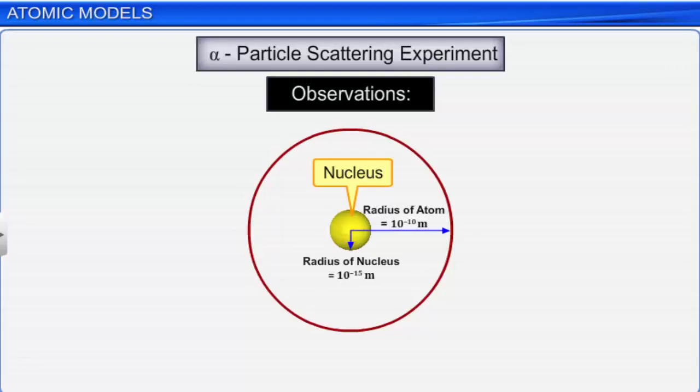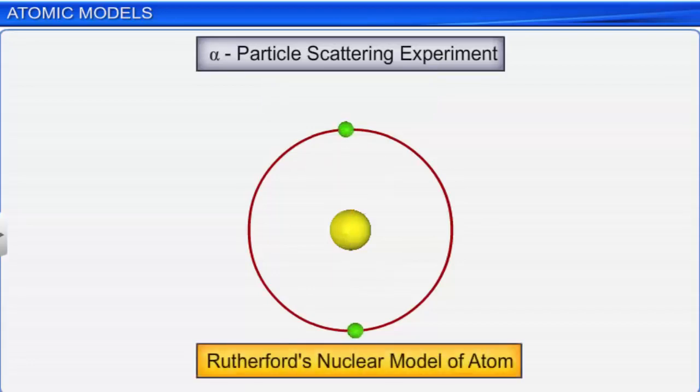For an atom of radius 10⁻¹⁰ meter, the radius of the nucleus is about 10⁻¹⁵ meter. That means if a cricket ball represents a nucleus, the radius of the atom would be about 5 kilometers. Based on the observations and conclusions of the gold foil experiment, Rutherford proposed a new atomic model called Rutherford's nuclear model of atom, immediately after the discovery of protons.